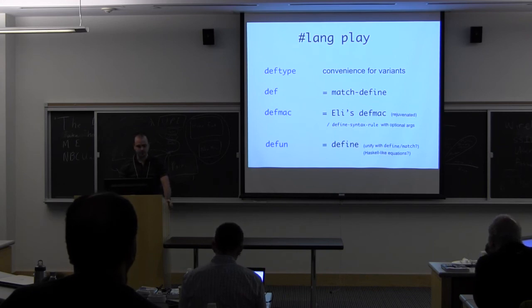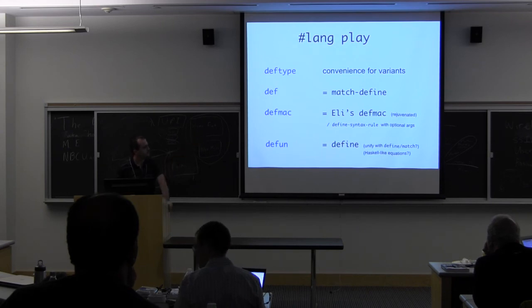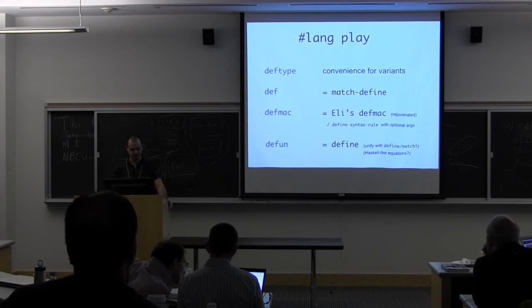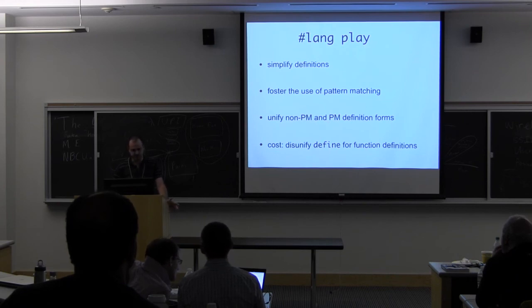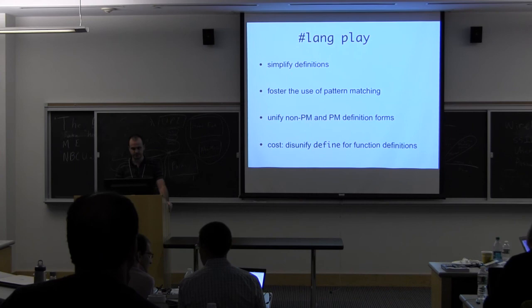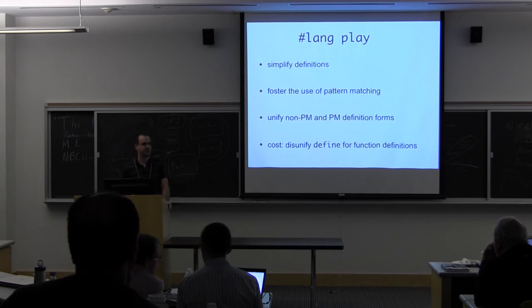So that's it. So we have def type for convenience for defining the variants. Def as a short matched define. Def mac as a defined syntax rule with optional arguments and adapted from Eli's code. And we are trying to have def to be the defined for functions, but with an unification with define match. So that you get the other thing to explore with Haskell like equations, basically. So the objective here was to simplify definition, foster the use of pattern matching. And for that, we are trying to unify non-pattern matching forms with pattern matching forms. And the cost to pay for that is to actually dis-unify define, which you can't use the same form to do pattern matching or to do the convenient function definition. But overall, we've found that this brings us more than what we lose.